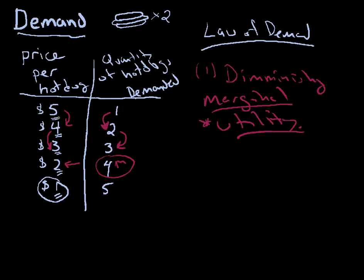This is why, as the price goes down, I'm willing to buy more hot dogs, and as the price goes up, I'm willing to buy fewer. At $5, I'm not getting $5 worth of value from my fifth hot dog, so I won't buy five — I'll just buy the one. The law of demand is very important because it gives us an idea of why demand is associated with benefit or utility.